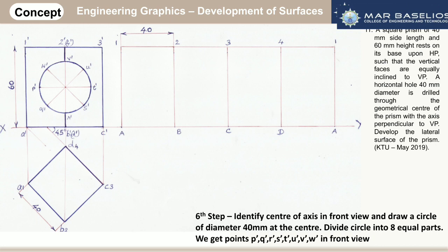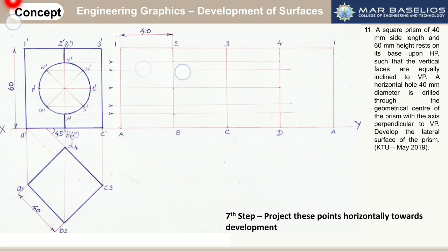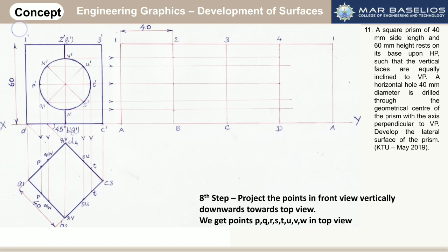In order to get these points in the development, project all these points horizontally towards the development. In the next step, project all these points vertically towards the top view. When you are projecting these points towards the top view, you will be getting P on two edges, Q and W on two edges. Similarly, V and R will be lying exactly at the corners, and here you will be getting generators S and U, and on this edge you will be getting T. Project all the generators from the front view towards the top view and identify the points.